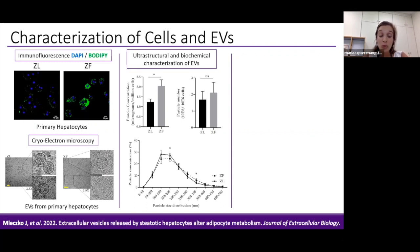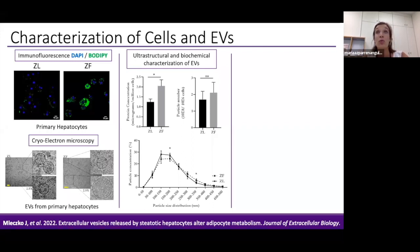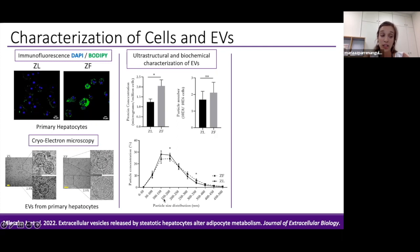We also analyzed particle size distribution. Despite 90% of particles being below 300 nanometers in diameter, there was a significant decrease in the 150–200 nanometer size range and an increase in larger extracellular vesicles obtained from obese hepatocytes.